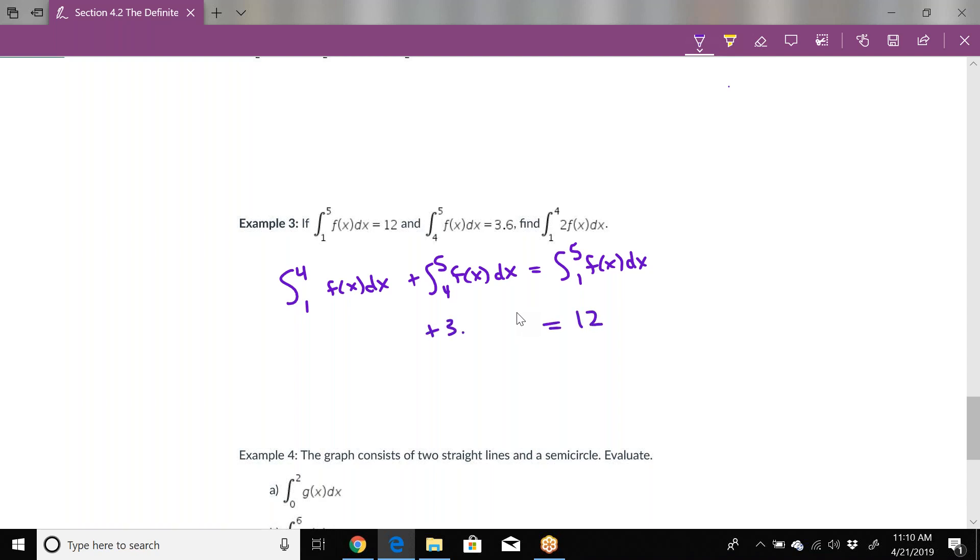We can replace the ones we know. 1 to 5 is 12, and 4 to 5 is 3.6. This one is an integral we can't evaluate yet. If we subtract the 3.6 from the 12, that's 8.4. So this integral from 1 to 4 equals 8.4. This guy is 2 times the integral from 1 to 4 of f of x dx, so all we need to do is double our answer. That's 16.8. We couldn't include it at first because the statement wouldn't have been true. It needed to be the same function. But once we work it out, we realize this is just a multiple of 2 of that integral.